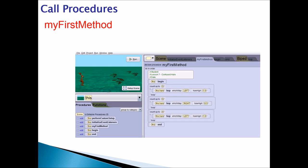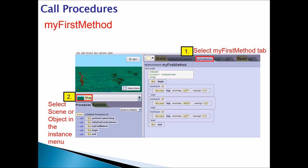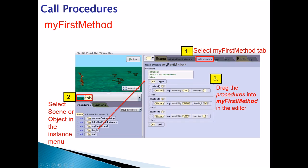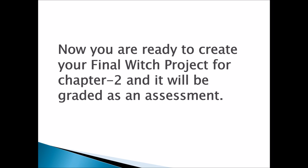My First Method runs the program. To call procedures: first, select the My First Method tab; second, go to the instance menu and select the object or scene you need the procedure for; third, drag and drop your procedure into the editor in My First Method; and fourth, click Run to test if your animation works correctly. Now you're ready to create your final project for Chapter 2, which will be graded as an assessment. Watch the next video on creating your final project.